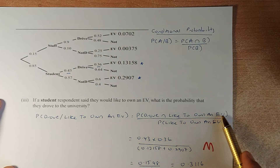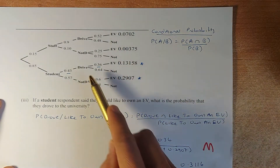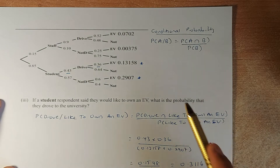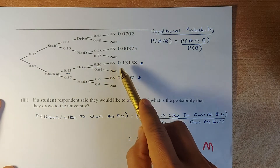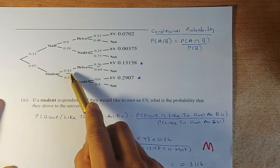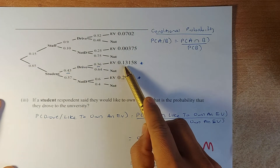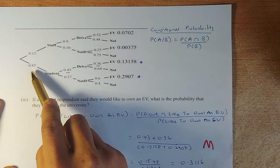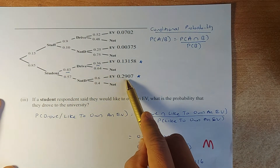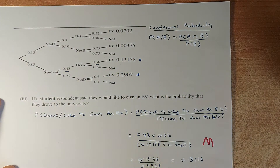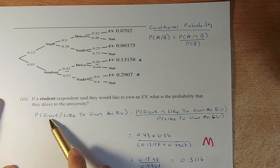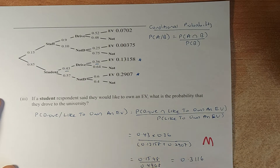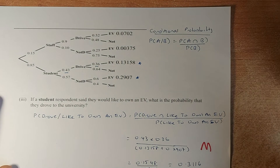To calculate the probability of drive and like to own an EV, we multiply 0.43 by 0.36, which gives 0.1548. For like to own an EV among students, it could be student who drive and like an EV: 0.85 times 0.43 times 0.36 equals 0.13158. The other possibility is student who don't drive but like an EV: 0.85 times 0.57 times 0.6 equals 0.2907. Adding these two probabilities gives 0.4968. So probability of drive given like to own an EV is 0.1548 divided by 0.4968, which gives 0.3116 — your first merit.